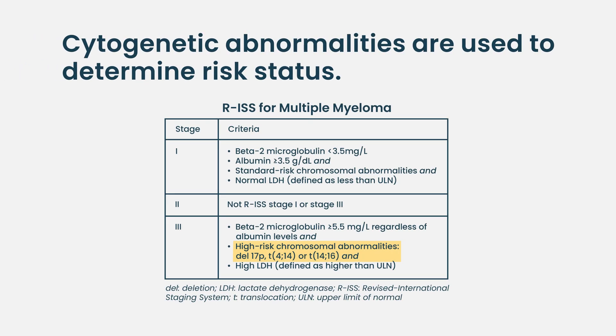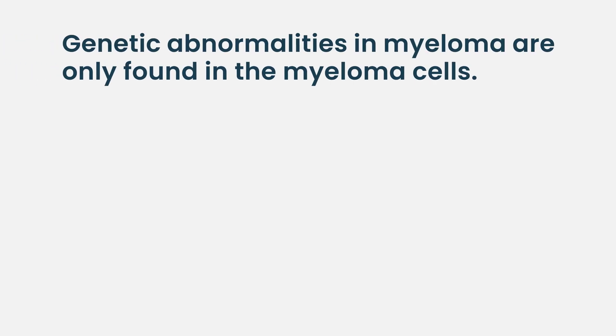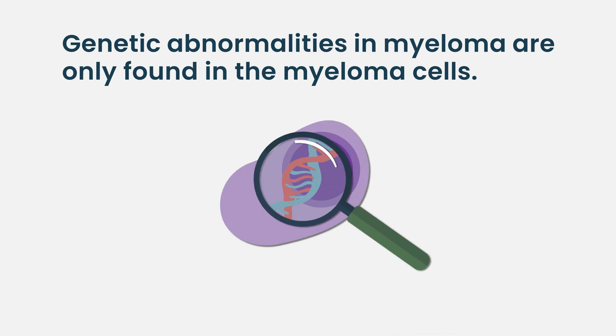Part of our understanding of myeloma is knowing what type of cytogenetic abnormalities a patient has, because that helps us understand whether their myeloma is more high risk or more standard risk. When we speak about genetic abnormalities, these are not in the cells all over your body — they're only within the cancer cells themselves. During bone marrow tests, we specifically look for certain genetic abnormalities that indicate higher or lower risk.